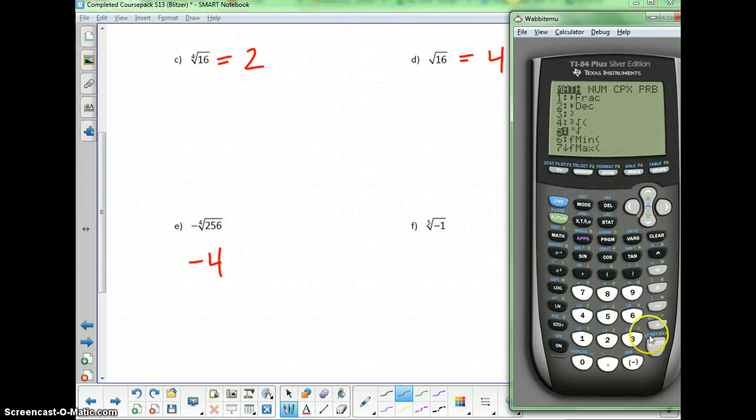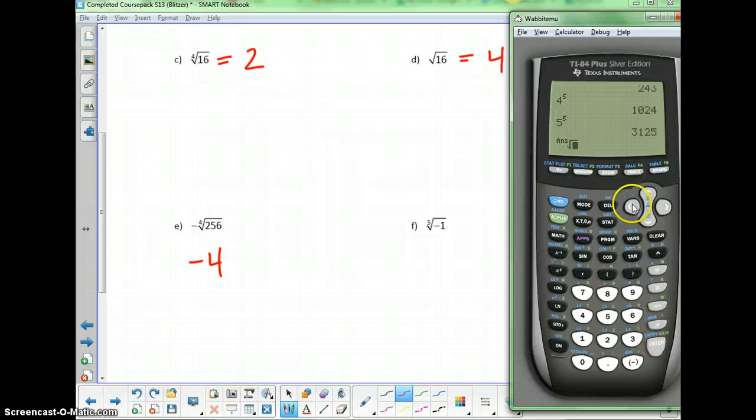To use the x root button, it needs me to put a number in first, usually. Since that number wasn't there, we're going to put this number as the root, which I didn't want. Fourth root of 256. Another way to do that, to make sure you get it right, you're going to type that 4 first for the fourth root, then hit your math key.